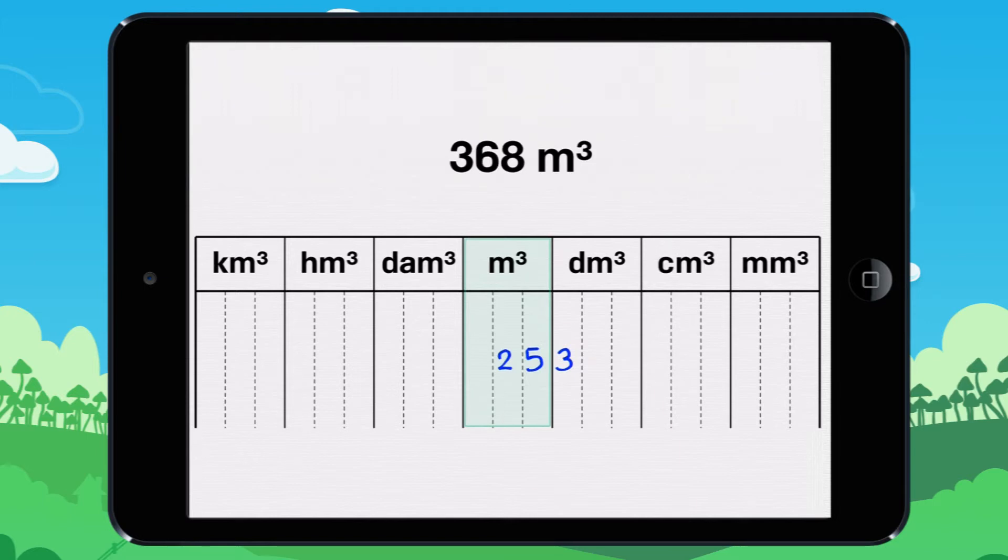Now we want to put 368 cubic meters. Watch how I do it. Write 8 into the cubic meters column, which is the farthest one on the right.